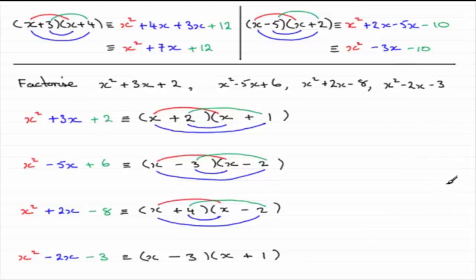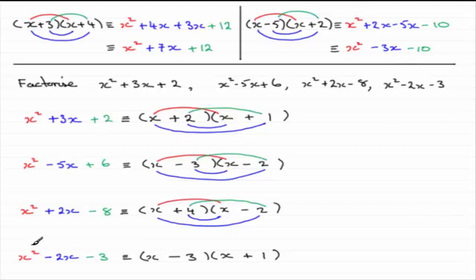That gives us an introduction to factorizing trinomials — quadratic expressions containing three terms. In the next tutorial, I'm going to look at putting a number in front of the x squared term, which is a bit harder and takes more practice. Hopefully you'll go on to that tutorial and extend this reasoning.